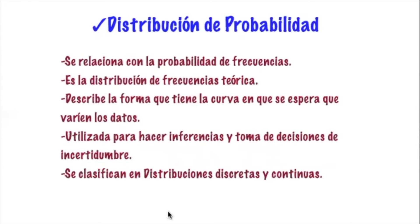La distribución de probabilidad se relaciona directamente con la probabilidad de frecuencias; de cierta forma, podemos decir que la distribución de probabilidad es la distribución de frecuencias teórica. Describe la forma que tiene la curva en que se espera que varíen los datos, es decir, el patrón de comportamiento esperado. Se utiliza para hacer inferencias: determinar si un valor está dentro de ciertos límites, si pertenece a esa población, comparar hipótesis o ver si está comprendido dentro de los cuartiles de la población.